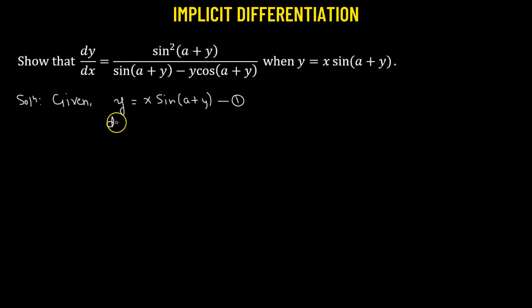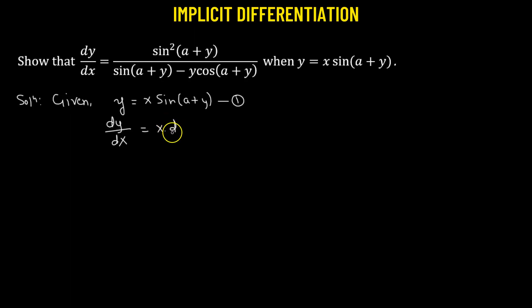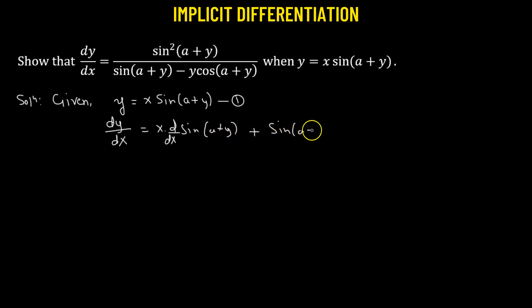We'll take the derivative on both sides with respect to x. On the right-hand side, we have x times sine(a + y), so we'll need to use the product rule. That gives us x times the derivative of sine(a + y) with respect to x, added to sine(a + y) multiplied by the derivative of x with respect to x.